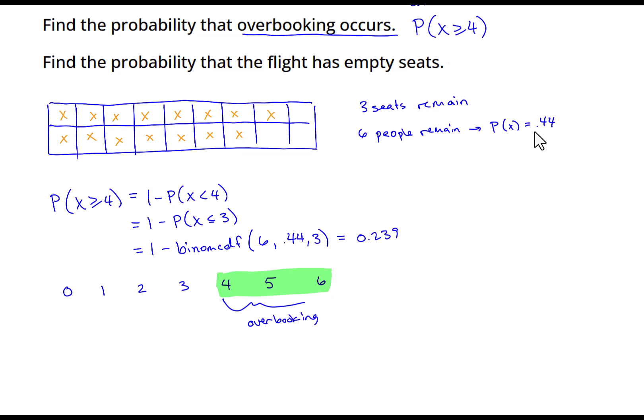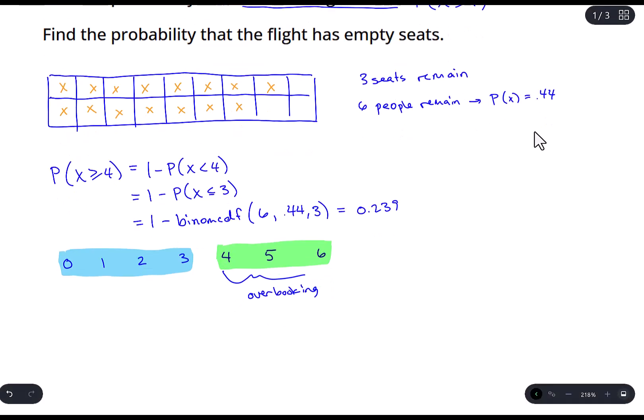So what we want is to add together the probabilities associated with each of these outcomes. The issue is binom CDF will only give you the values over here on the left end. But we can always use a left and right end probability as complementary to one another. So what we can do is we can find this through binom CDF. And then the inputs, of course, would be 6, 0.44 and 3. But because we don't want the left end, we want the right end, we do a complement of that.